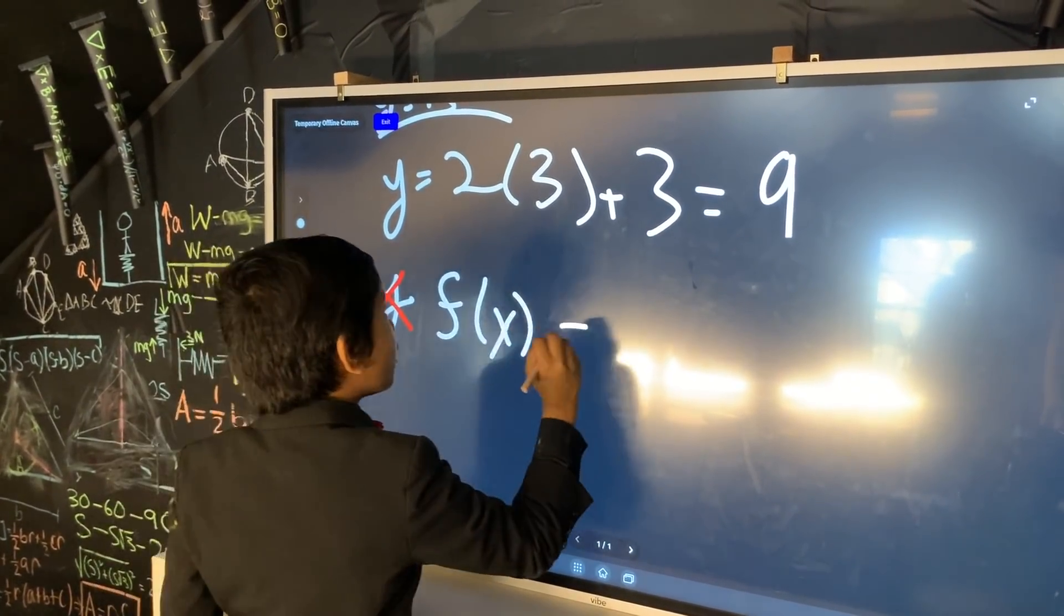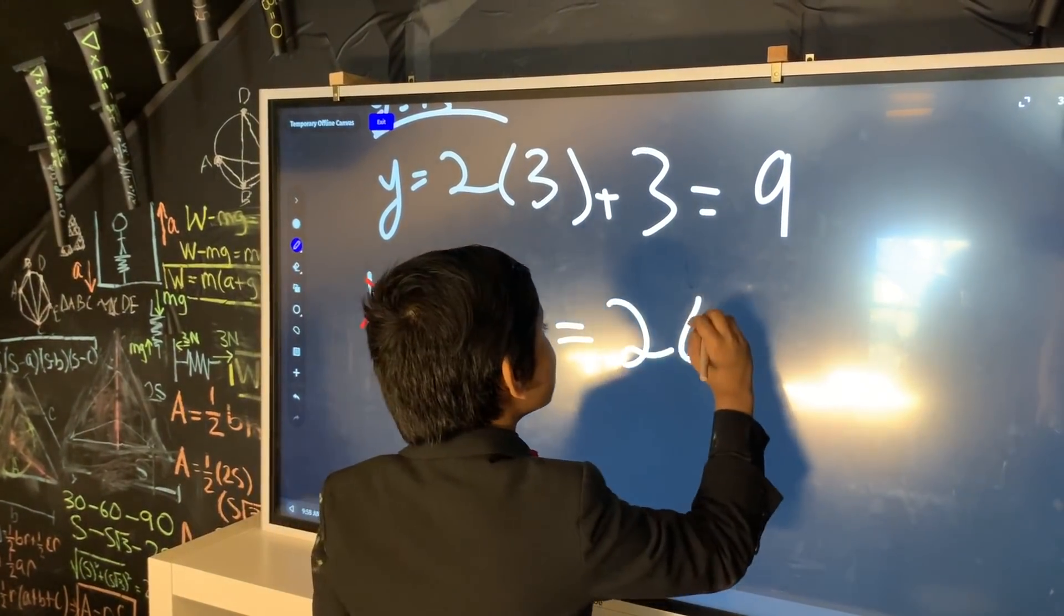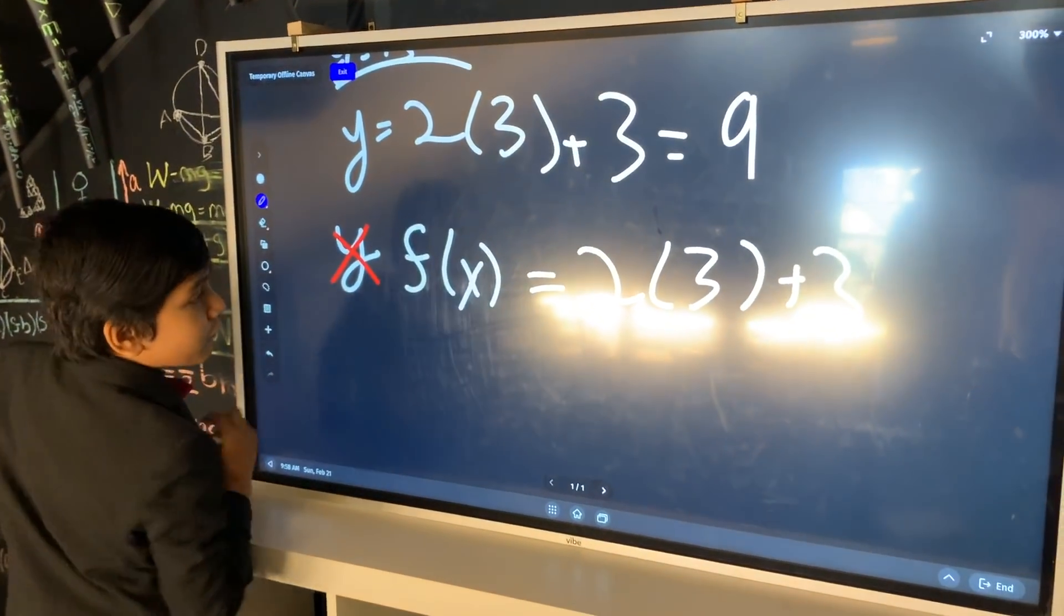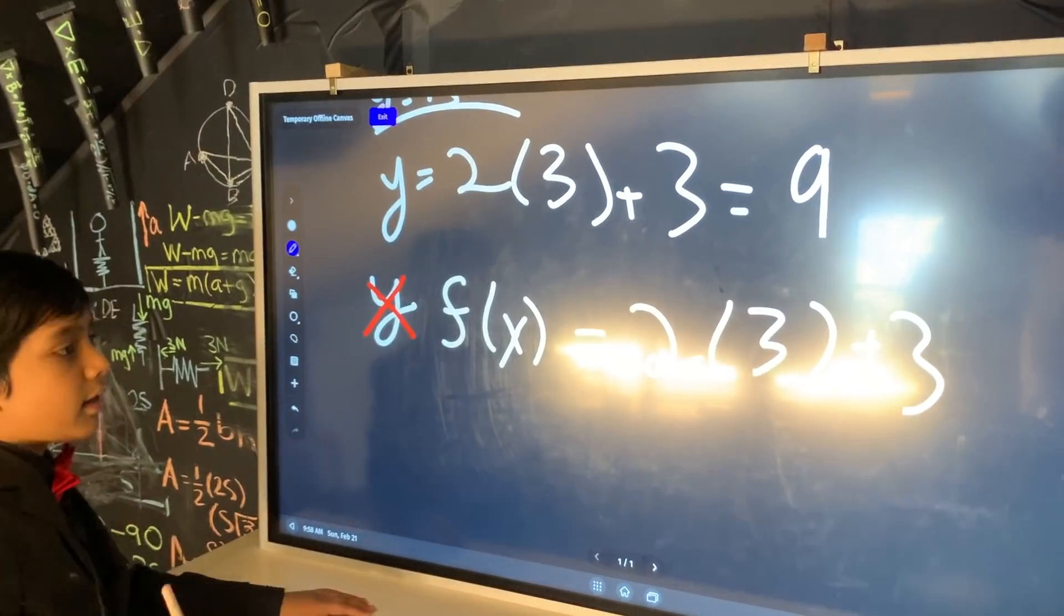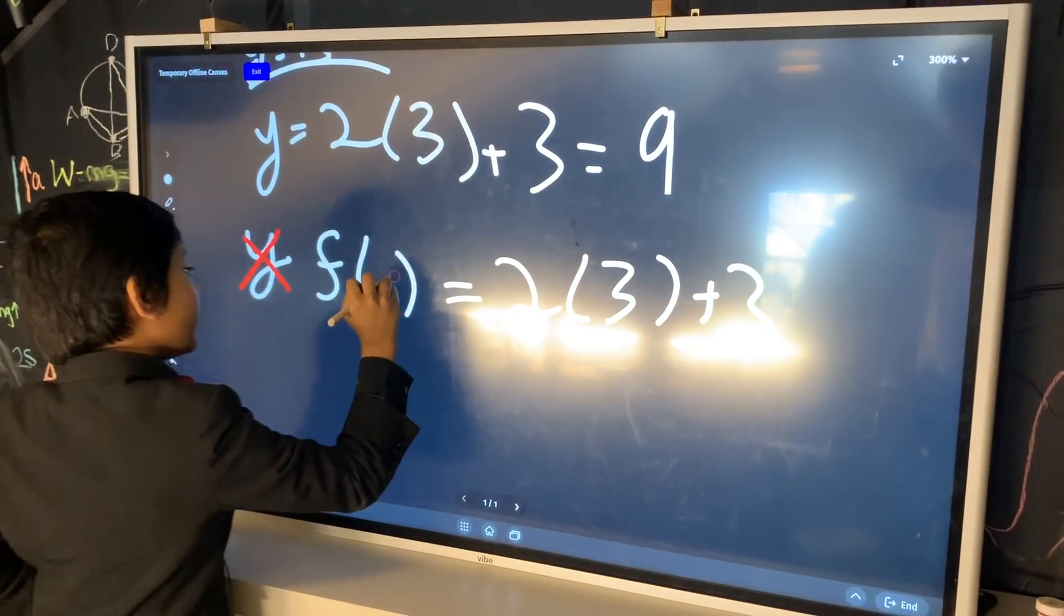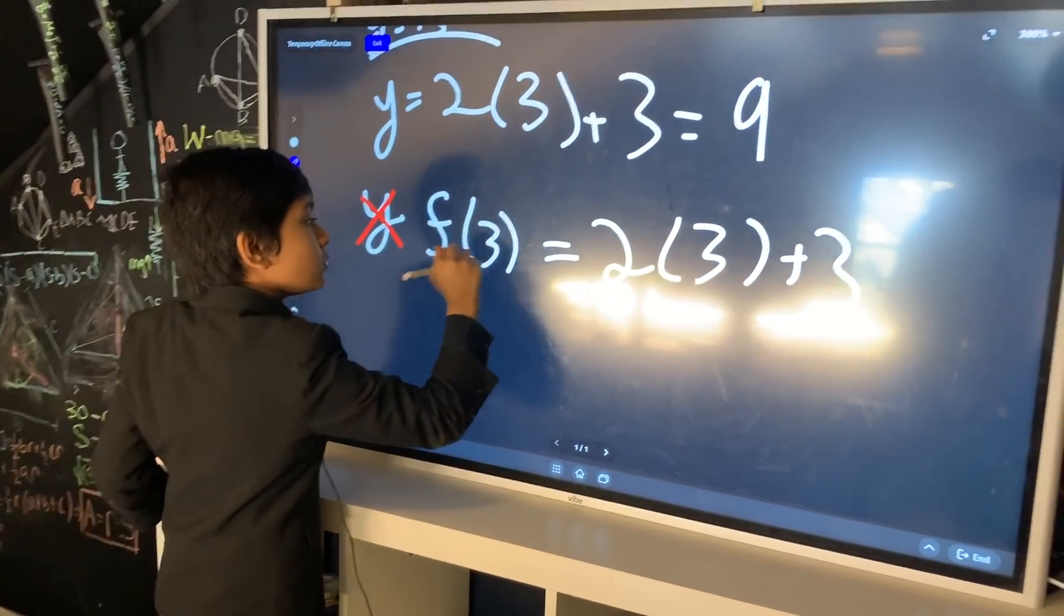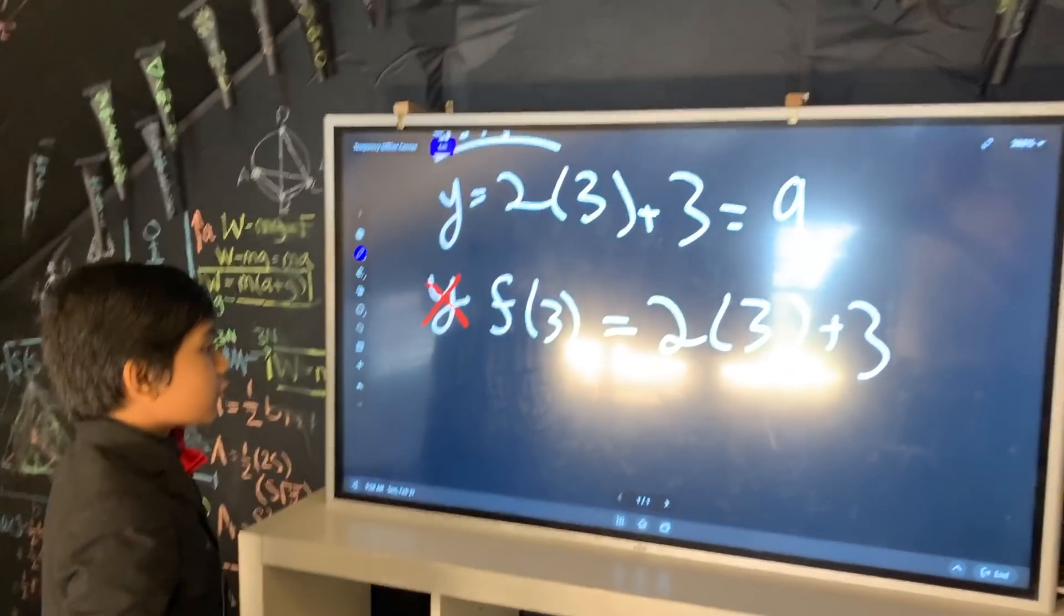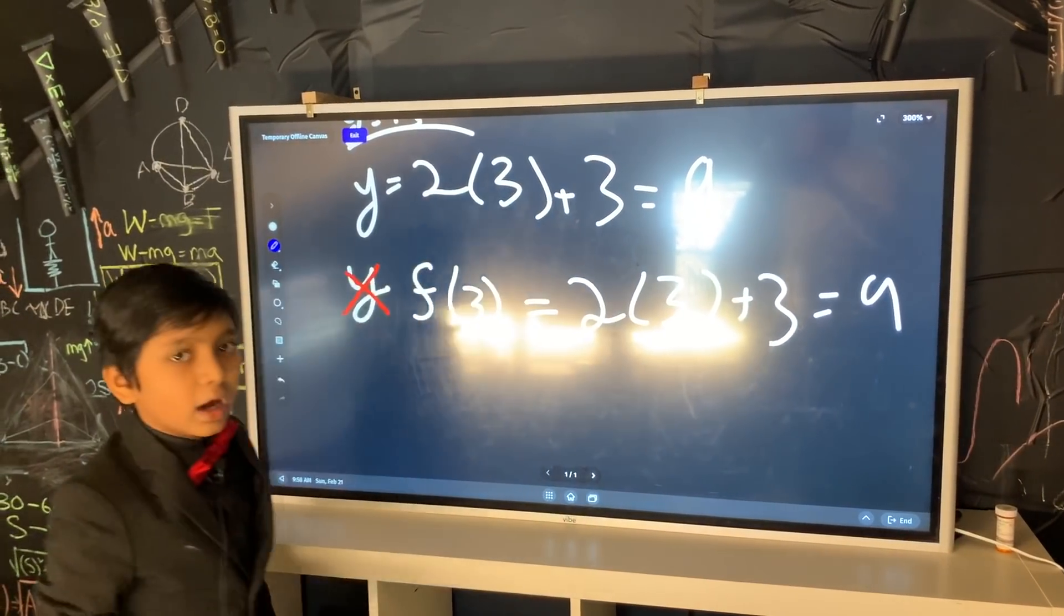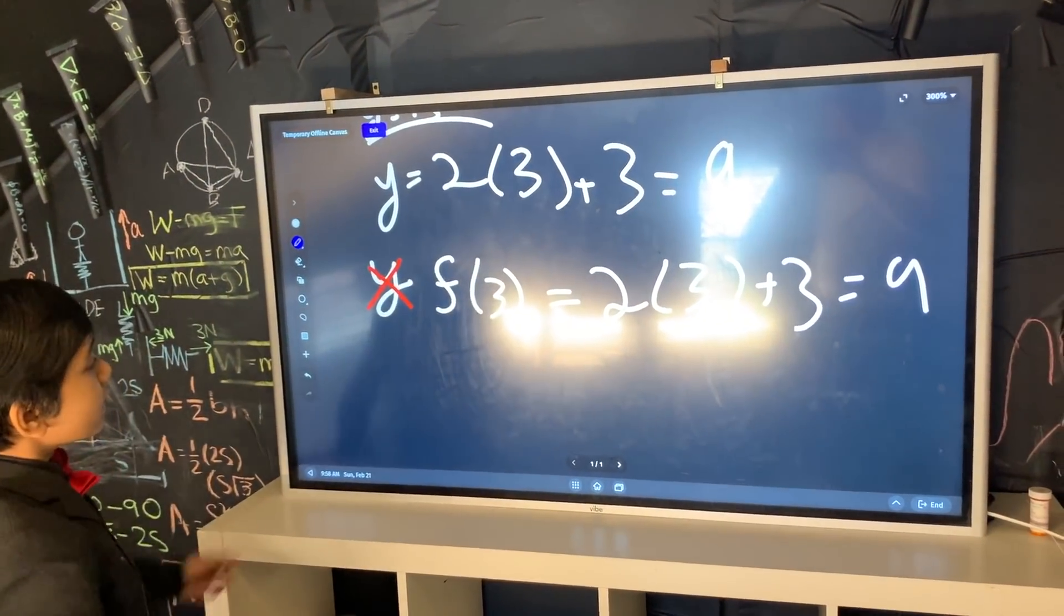So, we're going to be using that instead because it's more useful and tangible. Now, anyways, f of x is 2x plus 3. However, since x is now 3, we can make this 3. So, f of 3 is 2 times 3 plus 3 is 6 plus 3 equals 9.